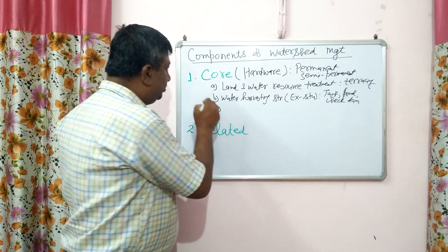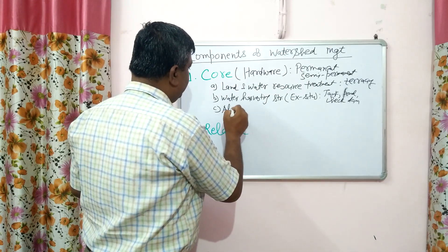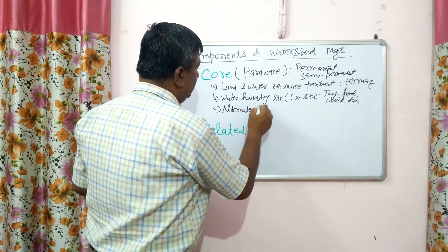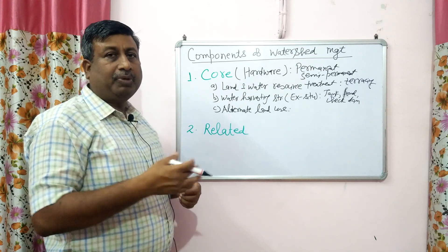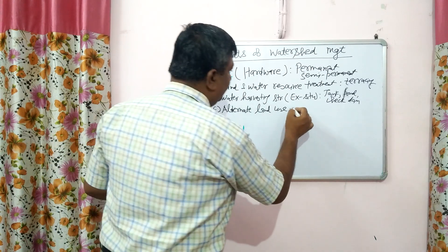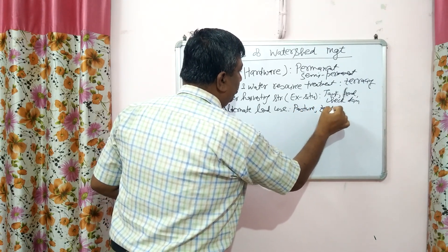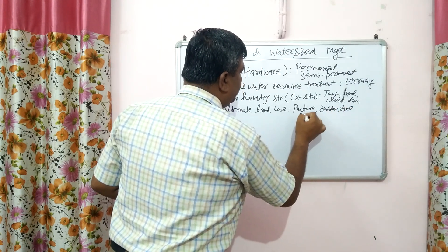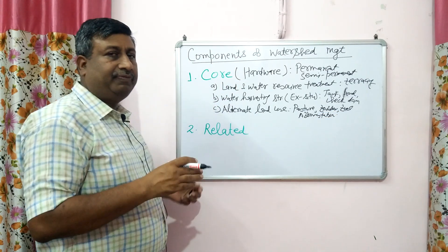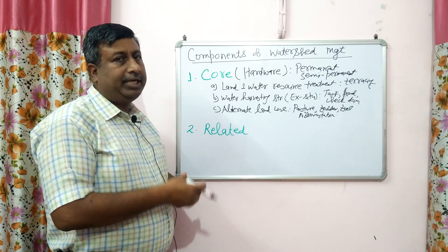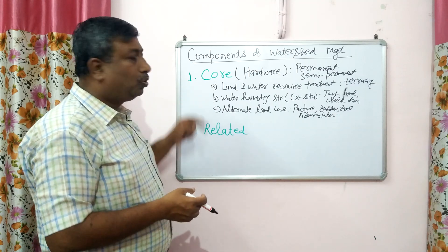The third core component is the alternate land use system. This means that if land is not fit for crop cultivation, it can be utilized for pasture, for plantation of fodder trees, fuel trees, or afforestation. This is another use of land — if it is not fit for cultivation, it can be used for any other purpose that provides fodder, fuel, etc.